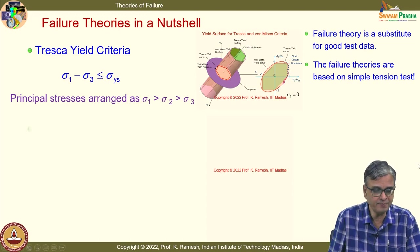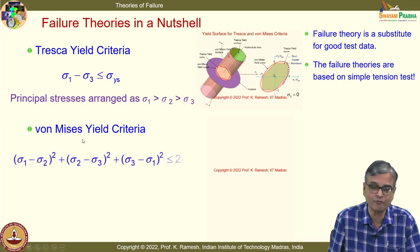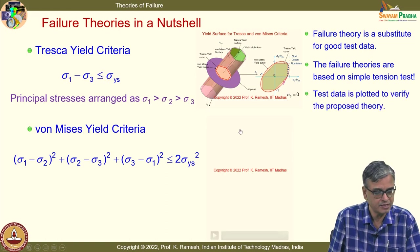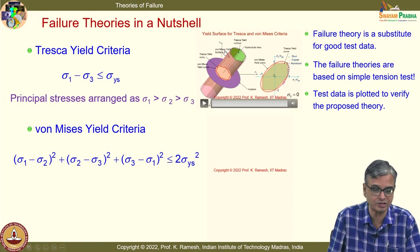For ductile materials you have Tresca and von Mises criteria, both shown here. One is an elongated hexagon, another is an ellipse. These appear as a circle and hexagon in three-dimensional σ_1-σ_2-σ_3 space. Von Mises yield criteria is the same as distortional energy theory as well as the limiting value of the octahedral shear stress — verified from multiple viewpoints.